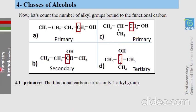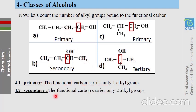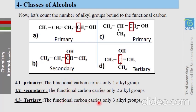As a summary, there are three classes of alcohols: primary alcohol, where the functional carbon carries only one alkyl group; secondary alcohol, where it carries two alkyl groups; and tertiary alcohol, where the functional carbon carries three alkyl groups.